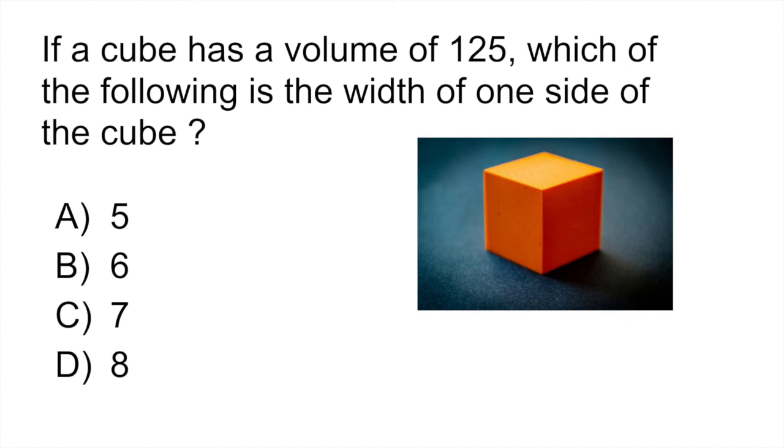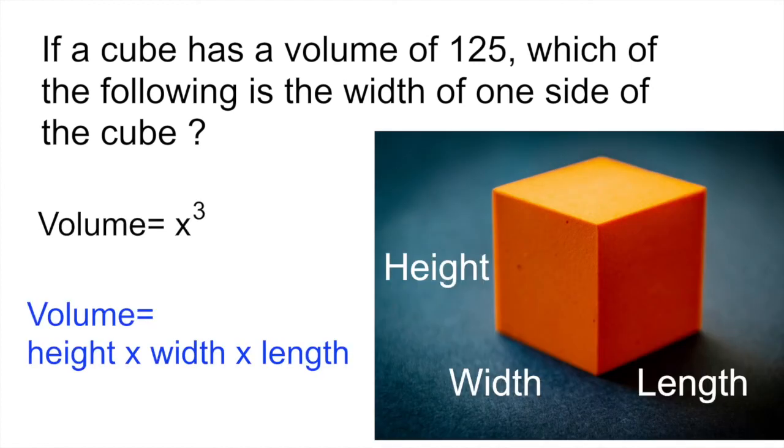So the question says, if a cube has a volume of 125, which of the following is the width of one side of the cube? So what you have to remember here is that when you look at a cube, if you look at the image on the right, the height, the width, the length, they're all the same. So whatever side you look at in a cube, it's going to be the same. So in order to find the volume of a cube, you would just say that it's equal to x cubed. Another way to write that down would be to say that the volume is equal to the height times the width times the length.